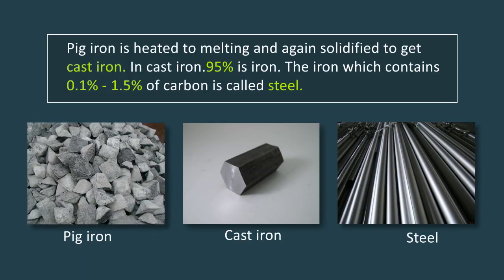Pig iron is heated to melting and again solidified to get cast iron. In cast iron, 95% is iron. The iron which contains 0.1% to 1.5% of carbon is called steel.